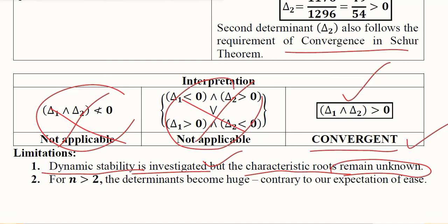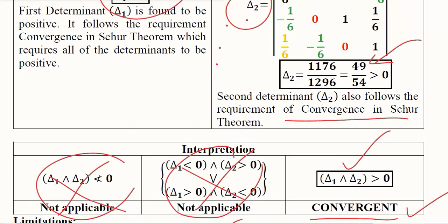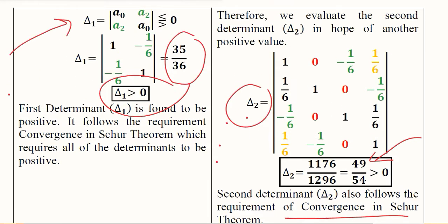Secondly, it can create very large determinants when we deal with cases where n is greater than 2. In the last two examples, we had second order difference equations and two determinants. The first one was 2 by 2 and the second was 4 by 4. In case of third order difference equations, I can expect a determinant of this order, which can get difficult.